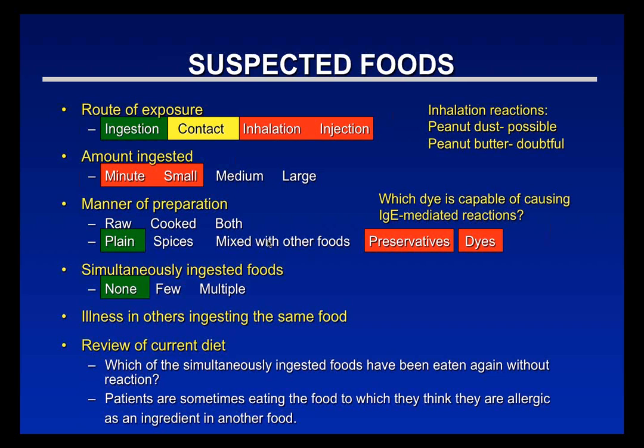You also want to know about other foods eaten at the same meal, in case the wrong food is blamed, and whether anyone else who ate the same food became ill — suggesting a toxic reaction. Ask which foods from the same meal they've eaten since without a reaction, making those less likely causes. Sometimes patients are unknowingly eating the food they think they're allergic to as an ingredient in another food.